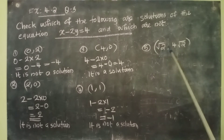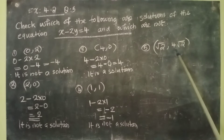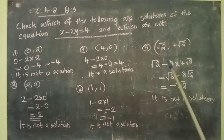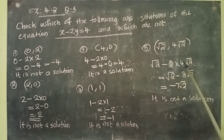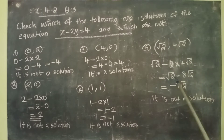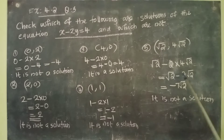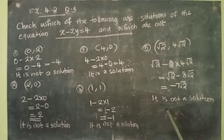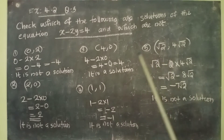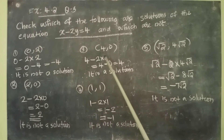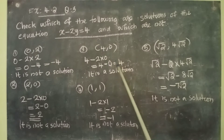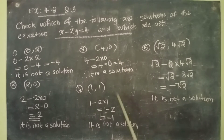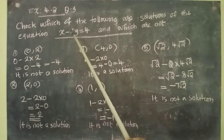The next pair is (√2, 4√2). Let us check. We get √2 minus 2 into 4√2, that is equal to √2 minus 8√2. Since √2 is 1√2, we have 1√2 minus 8√2, that is equal to minus 7√2. It is also not a solution. So among these 5 ordered pairs, we got only one solution: it is (4, 0). The remaining are all not a solution for the equation x minus 2y equal to 4.